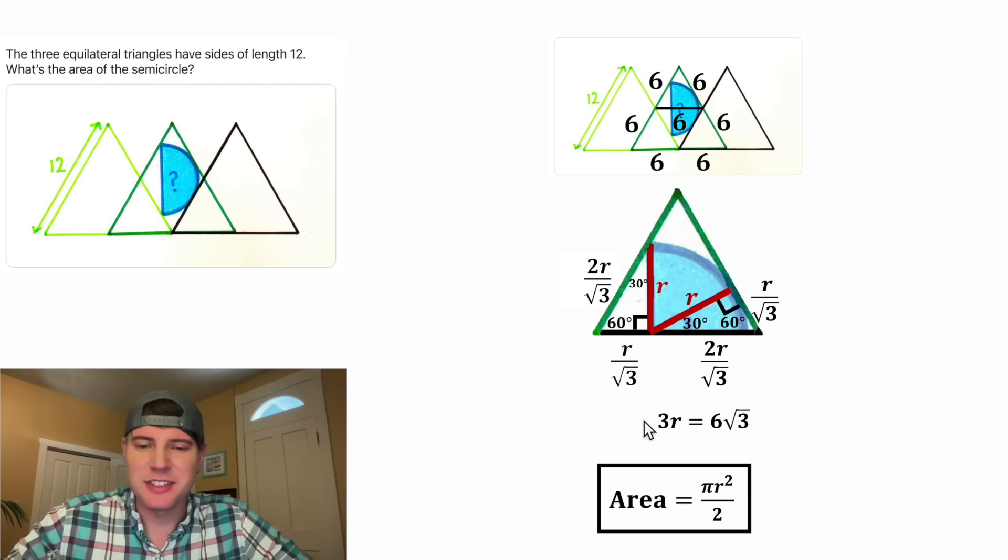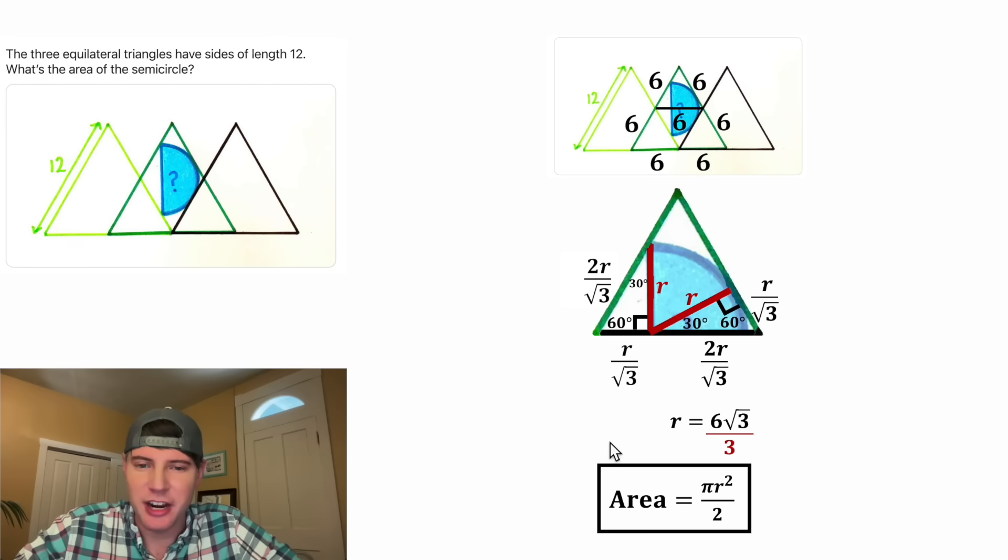From here to get the r by itself, let's divide both sides by 3. On the left hand side, these will cancel each other out, leaving us with r. And on the right hand side, 6 divided by 3 is equal to 2. So now we know that the r of our semicircle is equal to 2√3.